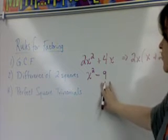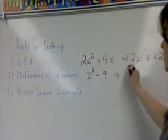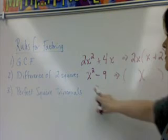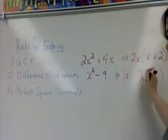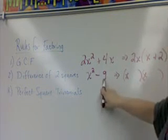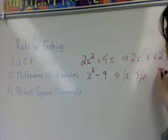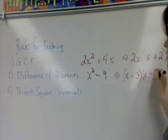When it's written in this form, it can be factored as the square root of x squared, which is x. The square root of 9, which is 3. Plus and a minus.